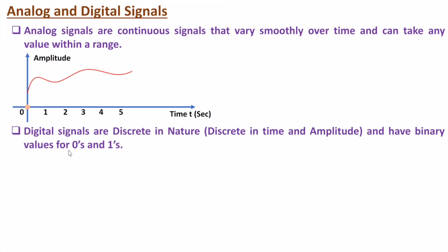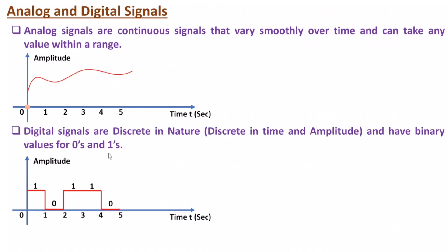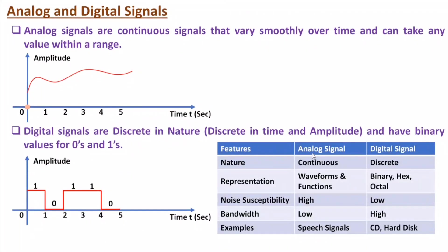Digital signals have binary values — zeros and ones. If you observe the waveform, for logic 1 we have higher amplitude and for logic 0 we have lower amplitude. So we have discrete amplitude levels. Comparing analog and digital: analog signals are continuous in nature, while digital signals are discrete in nature — discrete with respect to both time and amplitude.